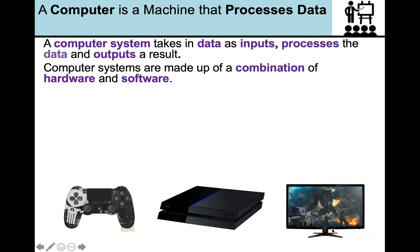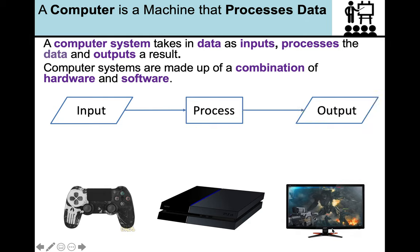A computer system is a machine that processes data. So a computer system takes in data as inputs. It will then process that data and produces an output as a result. And computer systems are made up of a combination of hardware and software.